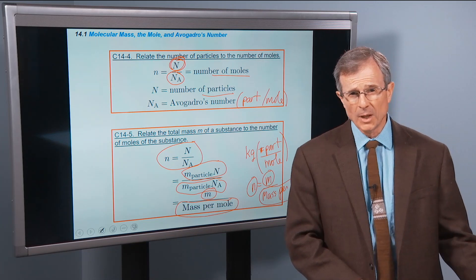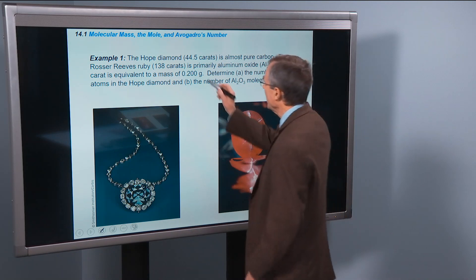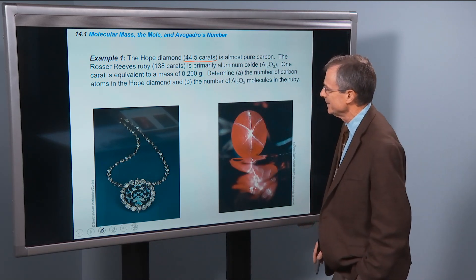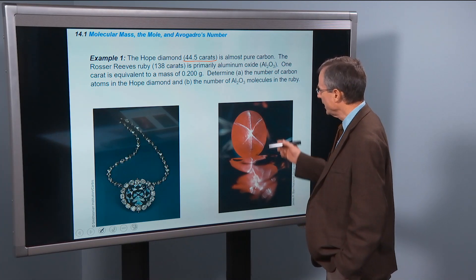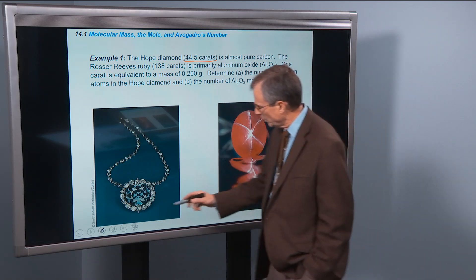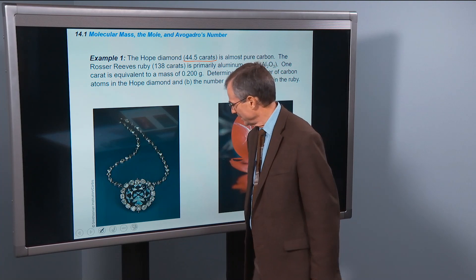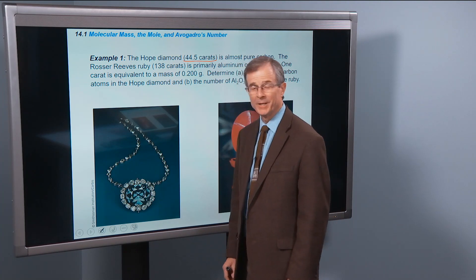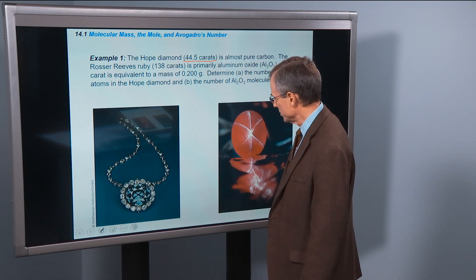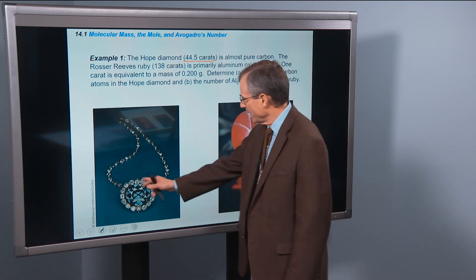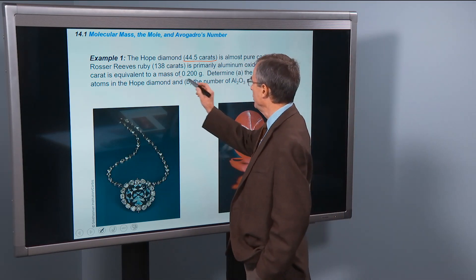Which makes complete sense: mass per mole, mass in the numerator, the masses cancel, you get 1 over 1 over moles which gives the number of moles. I think a lot of you have seen these before. So an example. The Hope Diamond, 44.5 carats, is almost pure carbon. The Rosser Reeves Ruby at 138 carats is on the right. The Hope is on the left, surrounded by many smaller diamonds, any of which would have been a very large rock on the finger of a person.